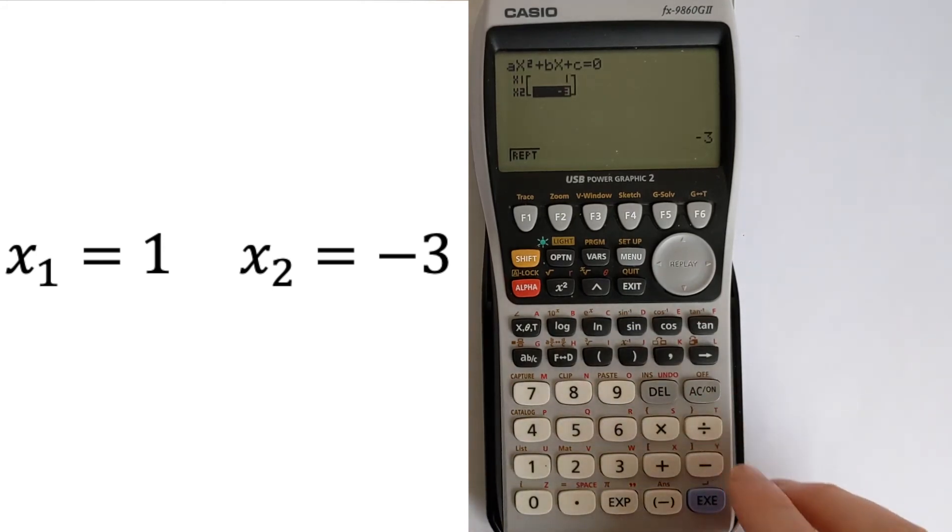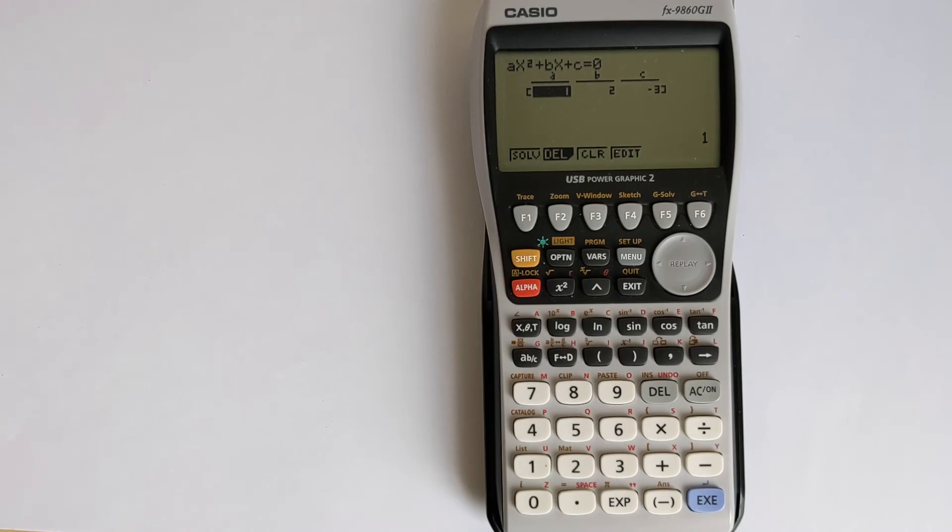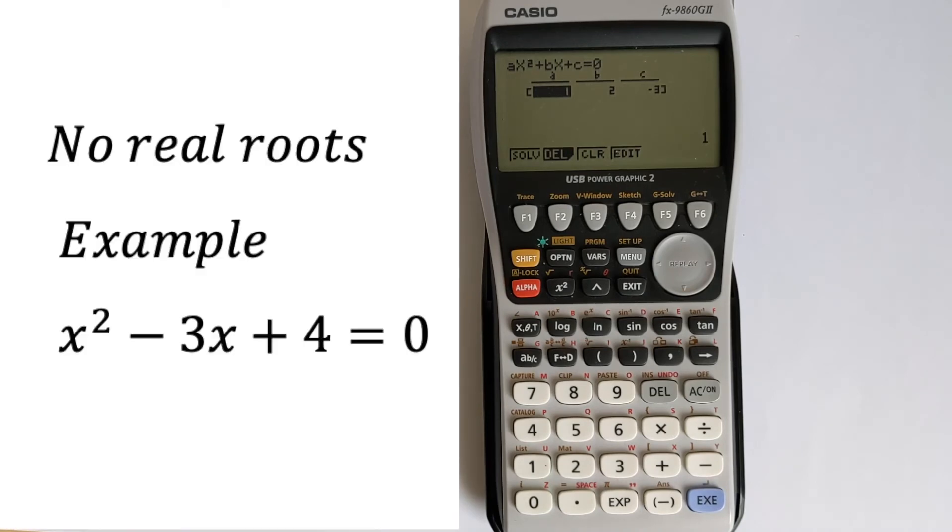This calculator isn't able to solve equations that don't have real roots, but it will tell you that. So for example, we could have an equation which is x² - 3x + 4 = 0. So I put the 1 in there, then -3, and then 4, and then equals. And you can see it will come up with an error that says no real roots. So this calculator won't find the imaginary roots. It will simply warn you that there's no real roots. And that means that there's no solutions in the real numbers. So that's what that error means.